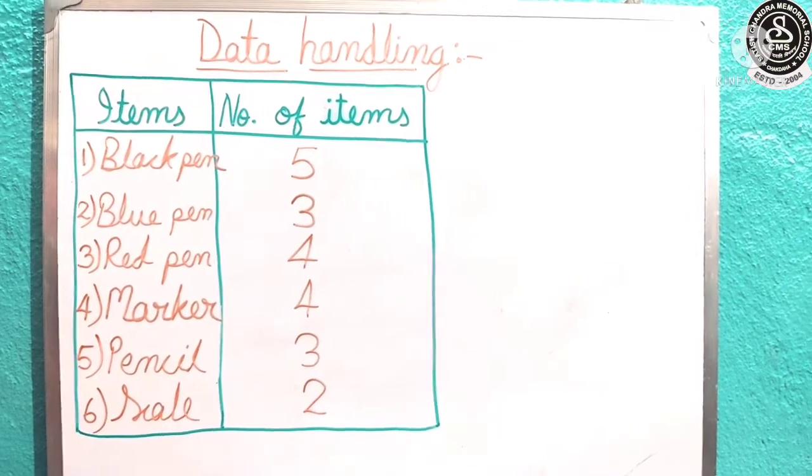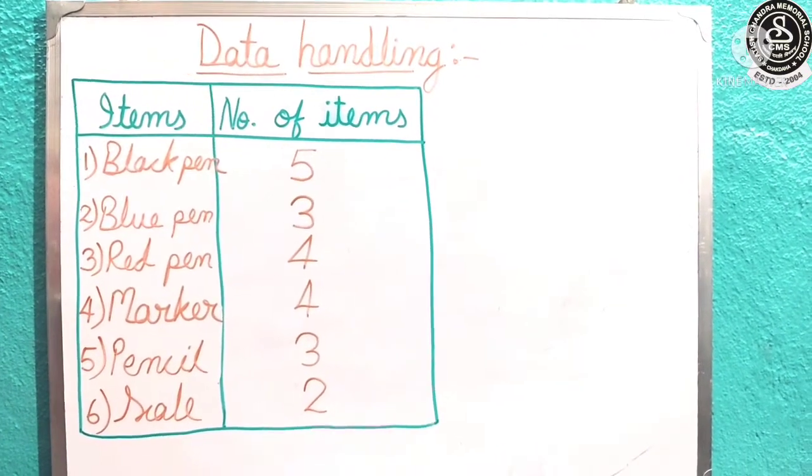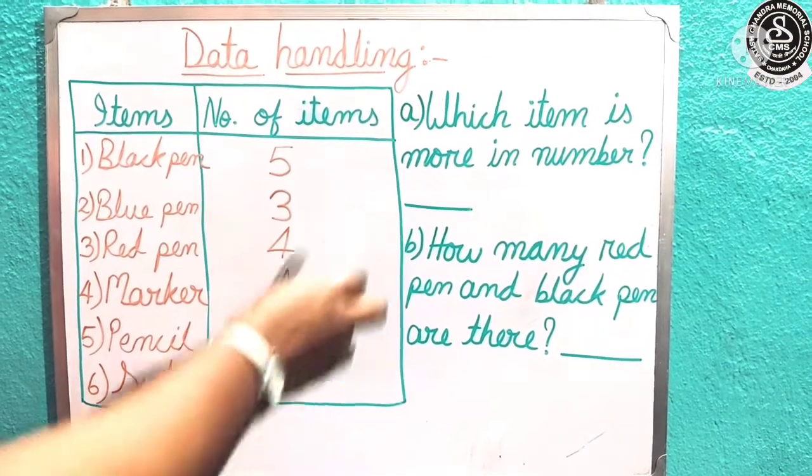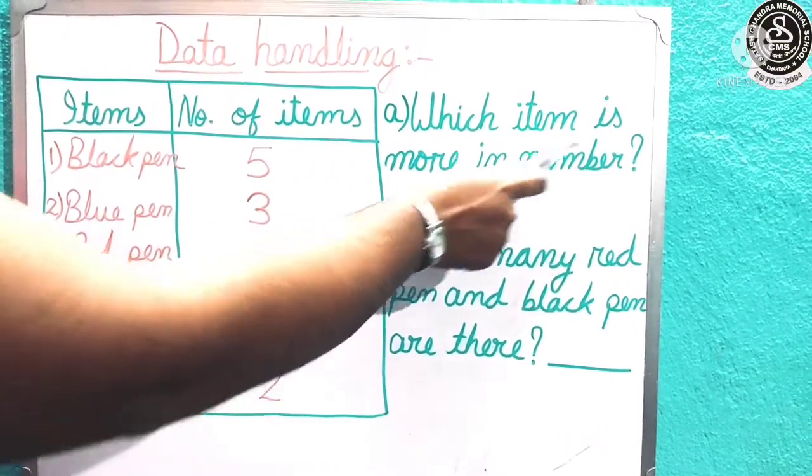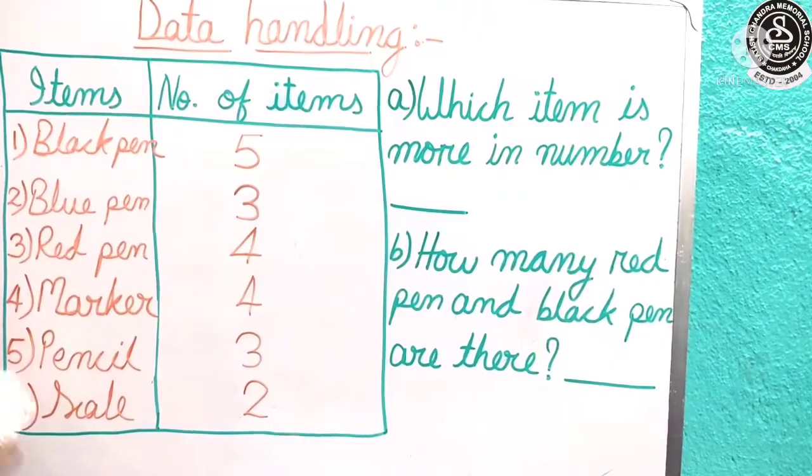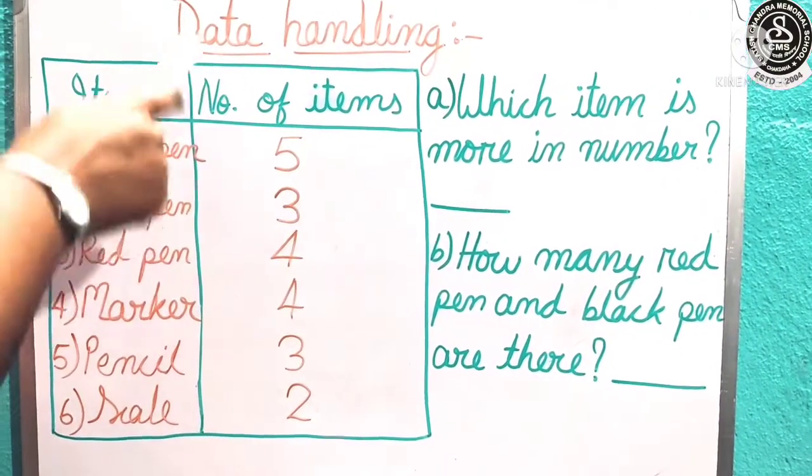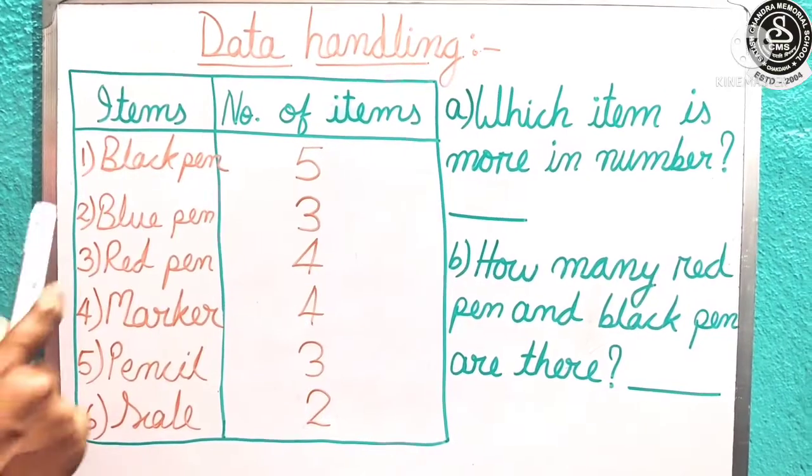Now based on this, there are some questions. Let us see the first question. Children, here is your first question. Let us read number A: Which item is more in number? We have the data in this chart, or we can say this data we have collected. Let us see which is more in number.